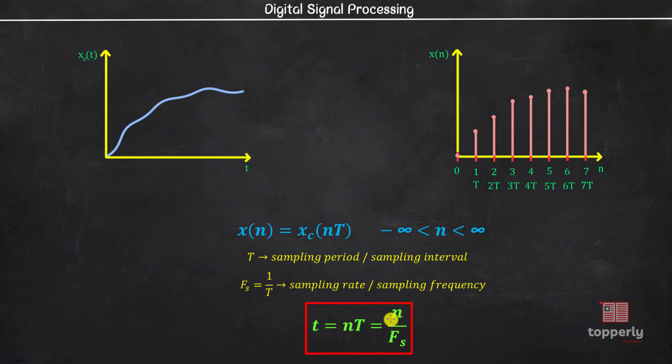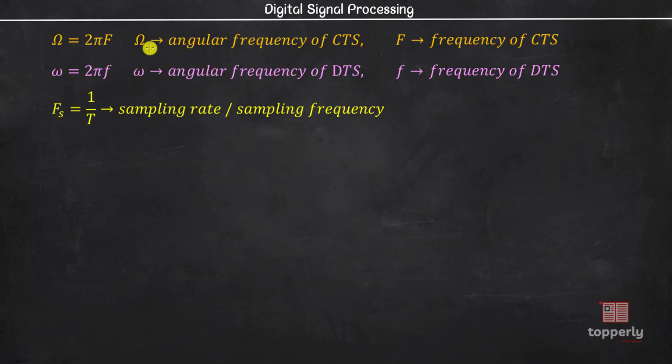Now due to this relation, there also exists a relation between frequency variables of continuous time signals and discrete time signals. Let us use capital omega to denote the angular frequency of a continuous time signal. Similarly, the angular frequency of a discrete time signal is denoted by small omega.